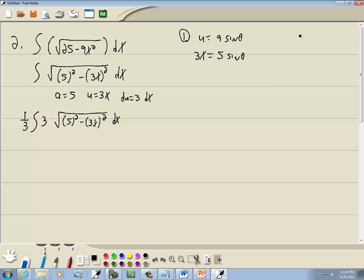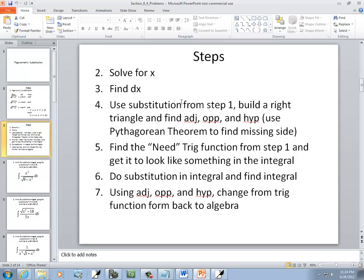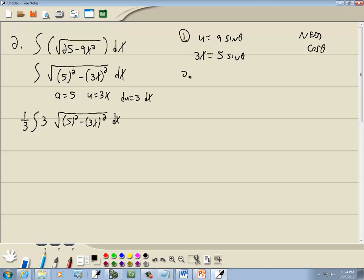So that's our substitution. Step 2, solve for x. On this one I divide both sides by 3 and we get x is equal to 5 thirds sine theta.